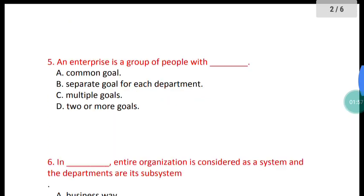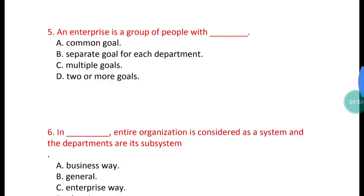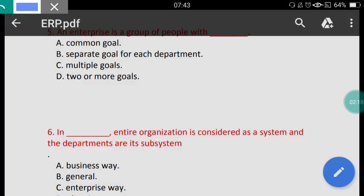Question 5: An enterprise is a group of people with what? The options are: a common goal, a separate goal for each department, multiple goals, or two or more goals. The correct answer is option A — an enterprise is a group of people with a common goal.